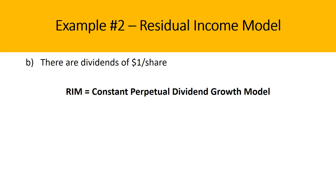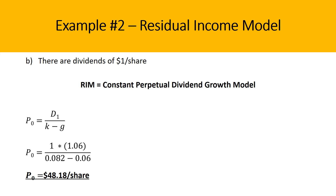In section B, if dividends are paid, we assume that with the CSR, the residual income model equals the constant perpetual dividend growth model. So we use the dividend growth model: dividends in period 1 divided by K minus G, giving an answer of $48.18 a share. There is a big difference between the two valuations — $113 in section A versus $48 in section B — illustrating the difference between what the RIM and the constant perpetual dividend growth model produce for this question.